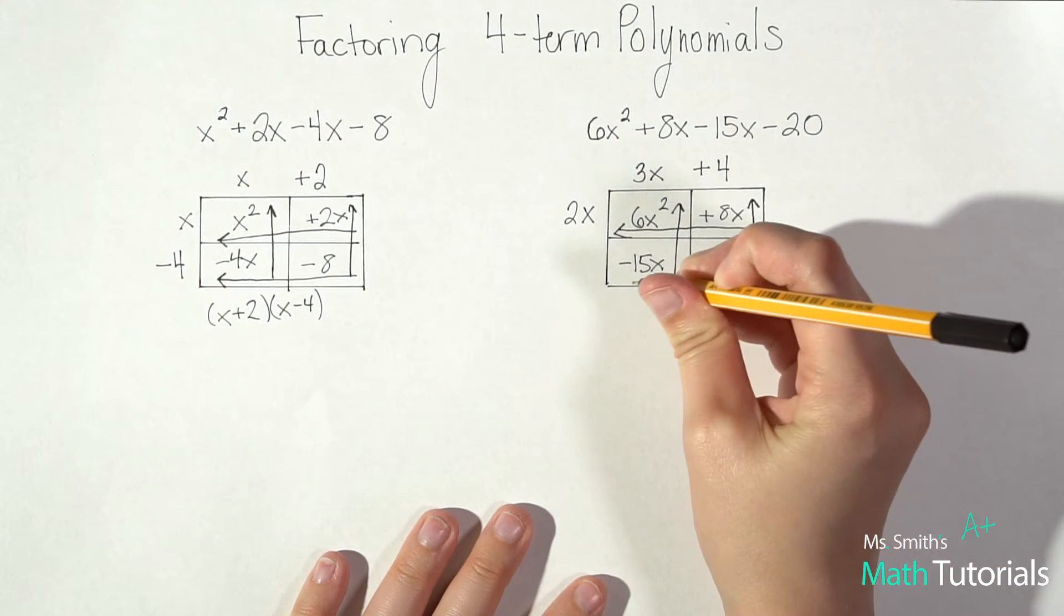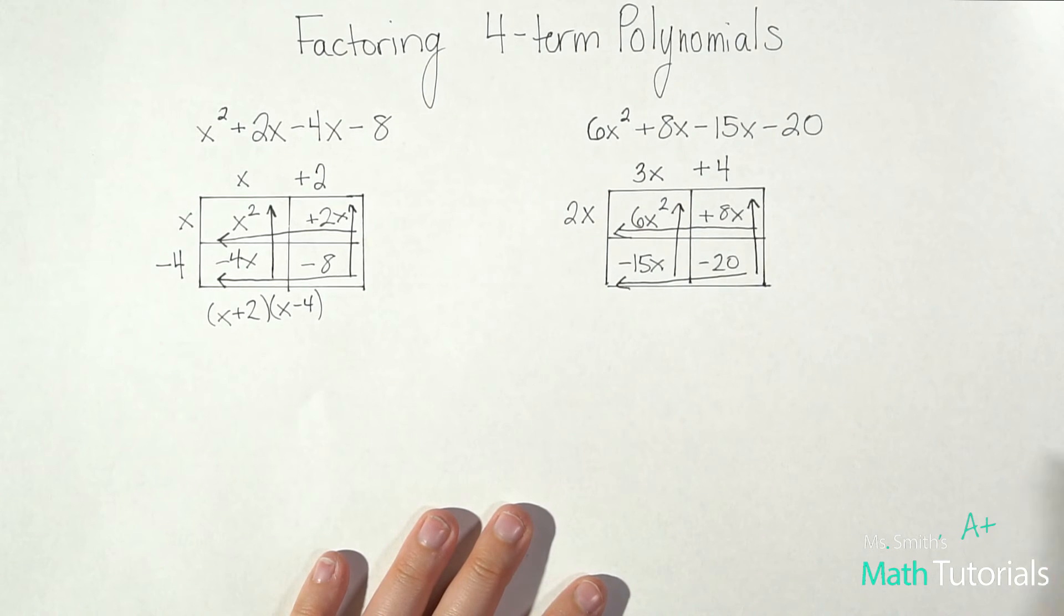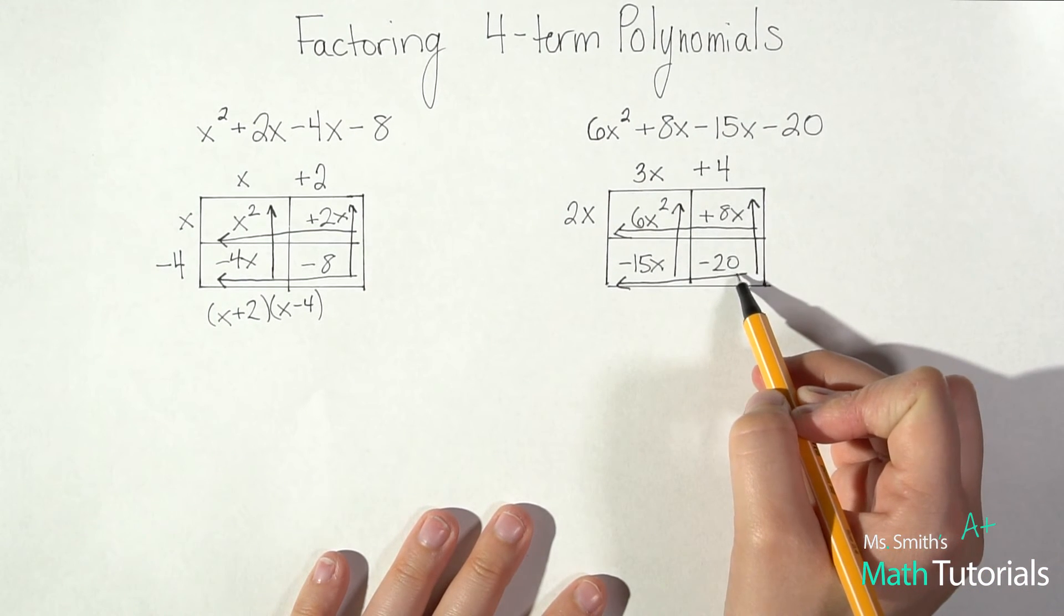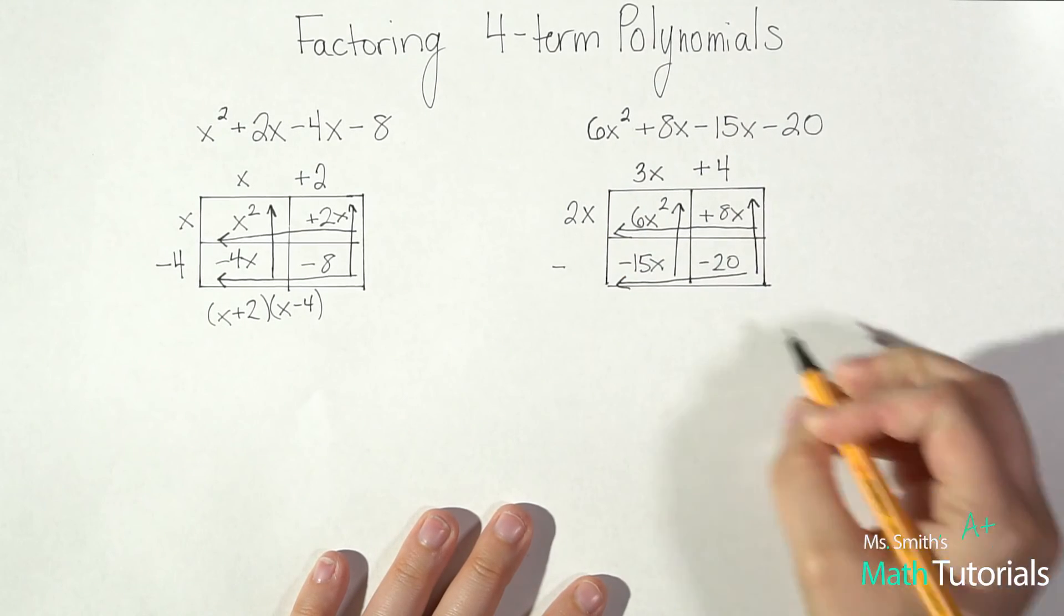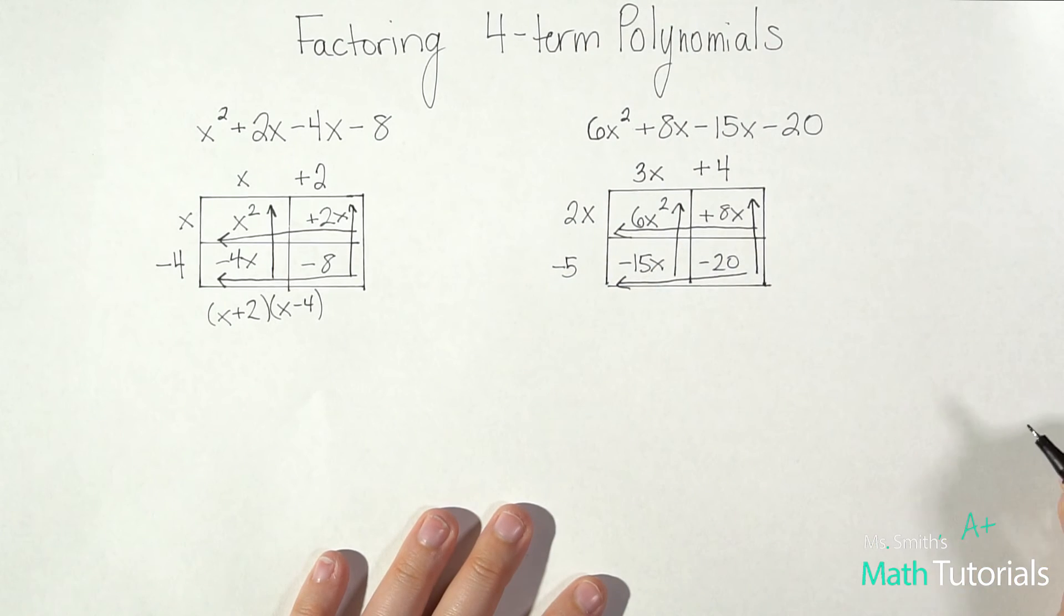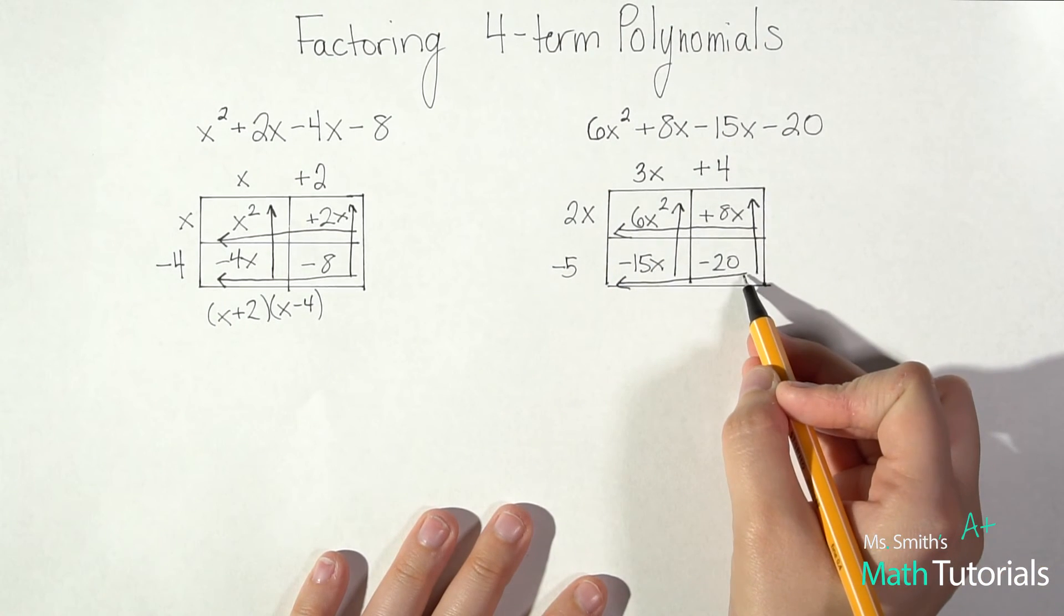Now we'll move right to left on the bottom. So between negative 15x and negative 20, I see my leading sign is negative, and 15 and 20, GCF will be 5. I can't pull an x out because there's not one here.